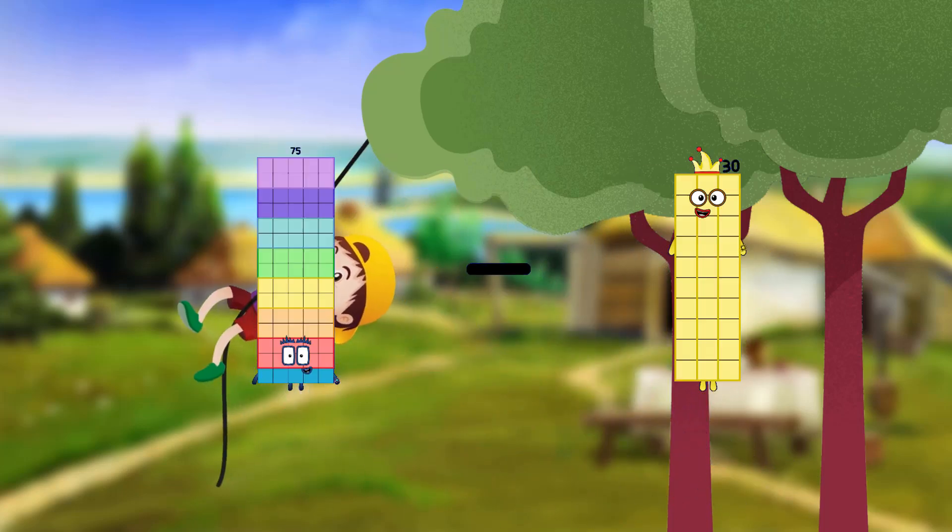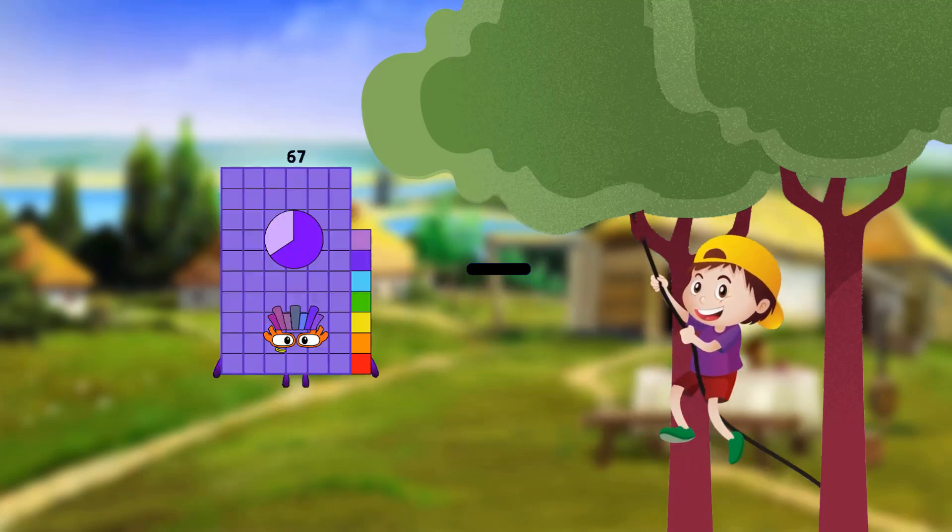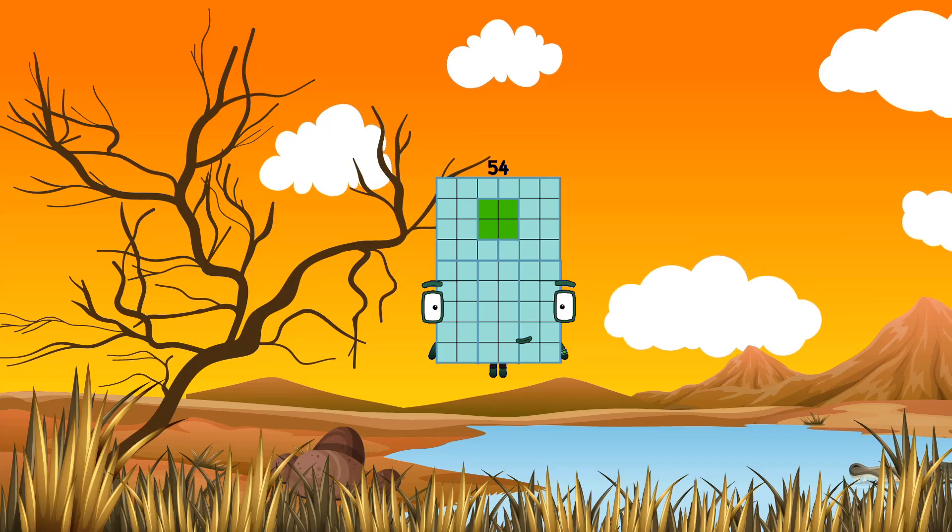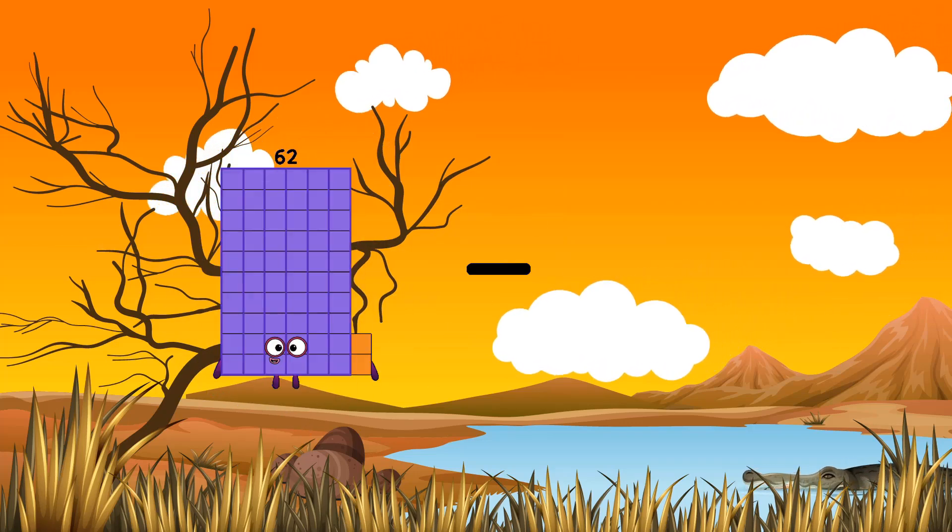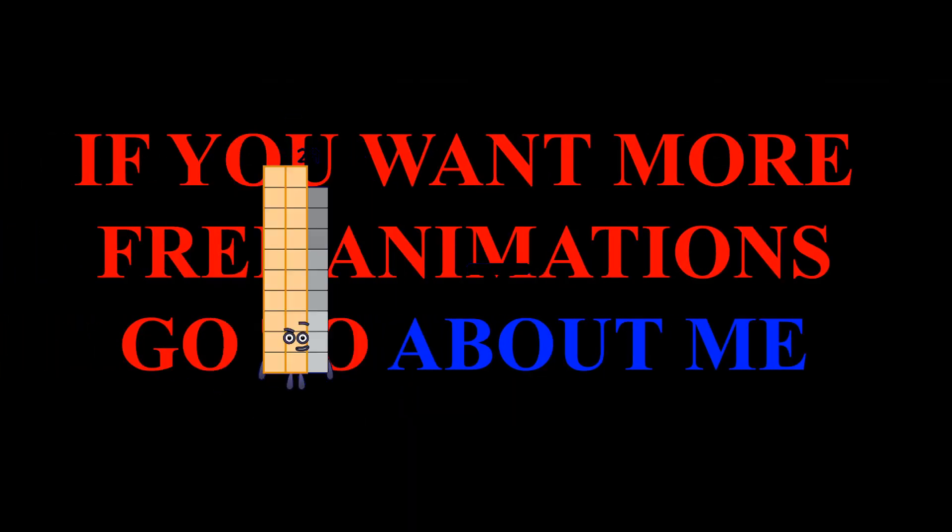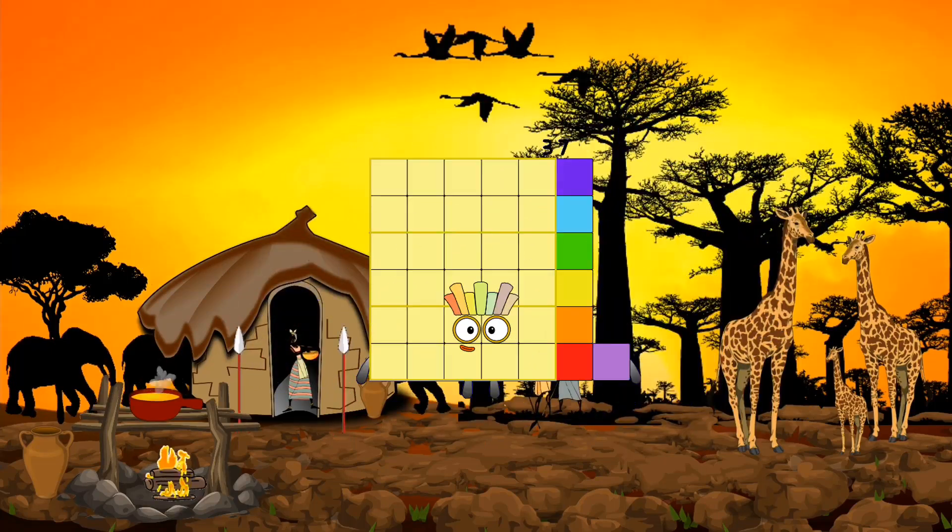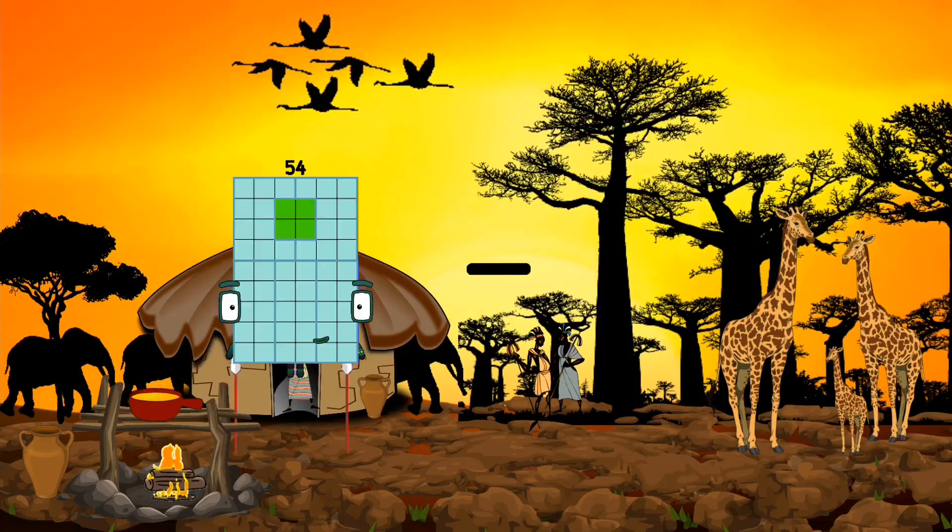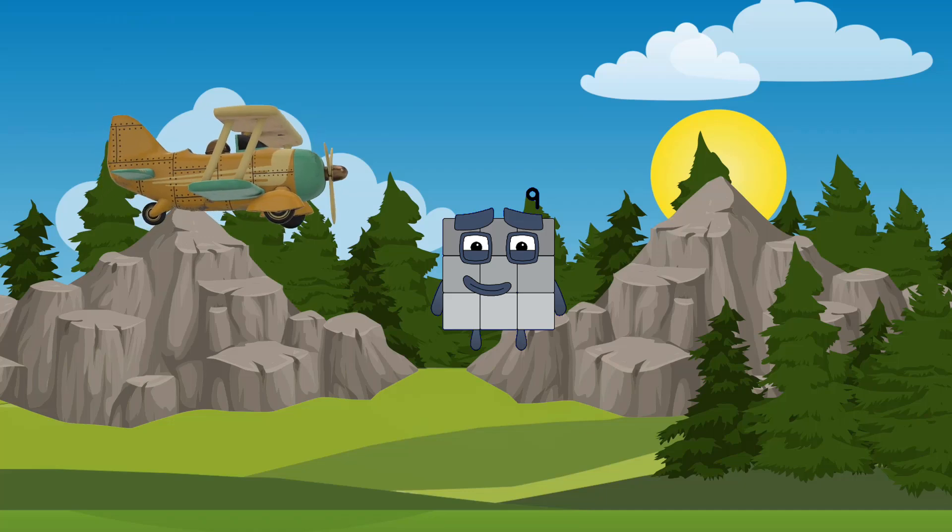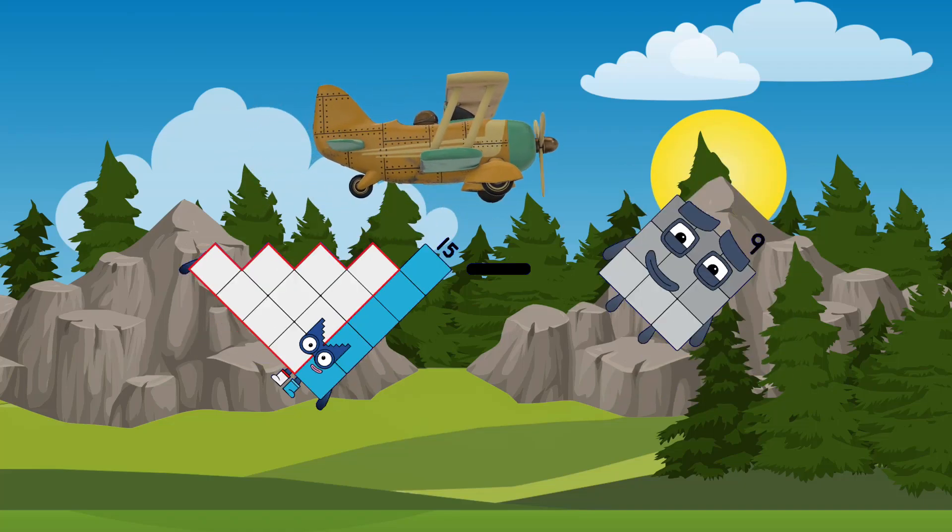75 minus 36 equals 39. 64 minus 10 equals 54. 62 minus 28 equals 34. 76 minus 39 equals 37. 15 minus 9 equals 6.